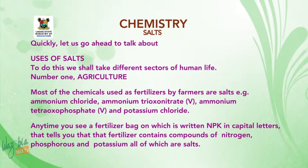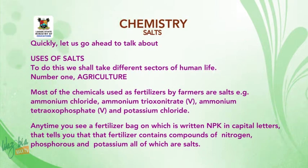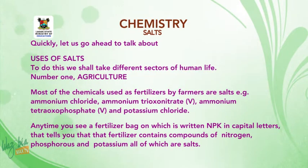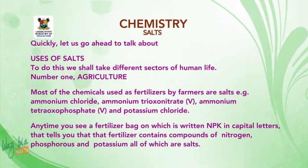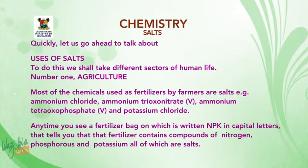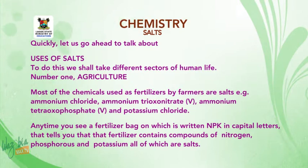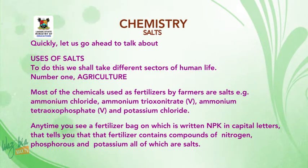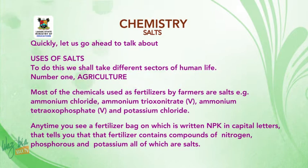Let's go ahead to talk about uses of salts. We shall take different sectors of human life. Number one: agriculture. Most of the chemicals used as fertilizers by farmers are salts, e.g. ammonium chloride, ammonium trioxyl nitrate 5, ammonium tetraoxyl phosphate 5, and potassium chloride. Anytime you see a fertilizer bag with NPK written on it, that tells you the fertilizer contains compounds of nitrogen, phosphorus, and potassium, all of which are salts.